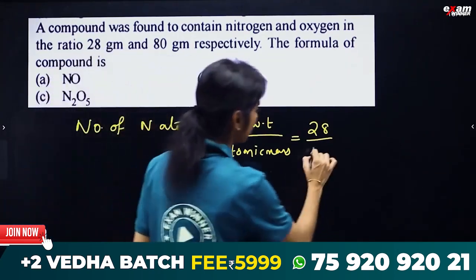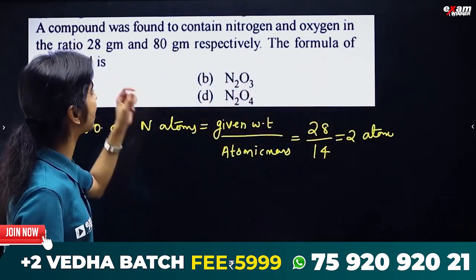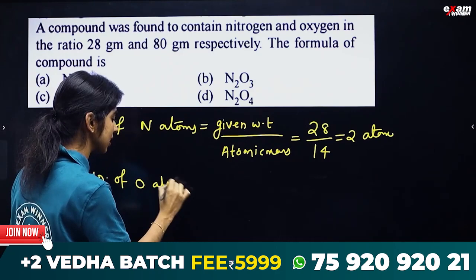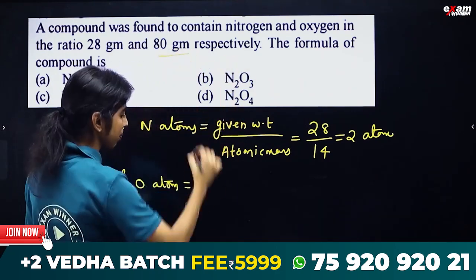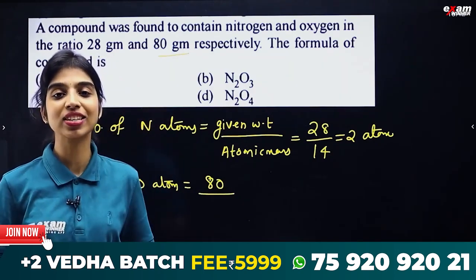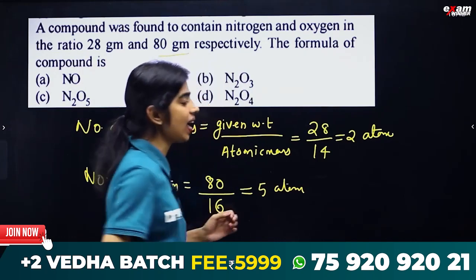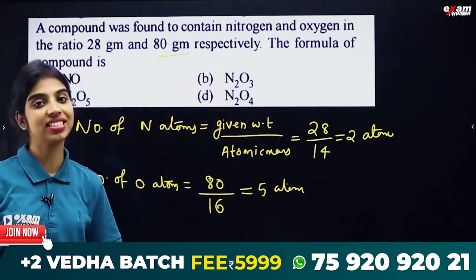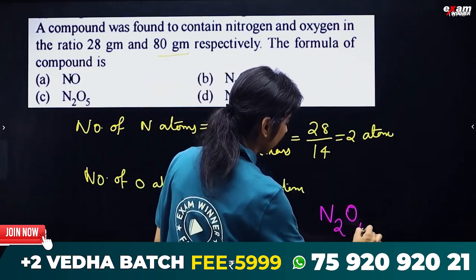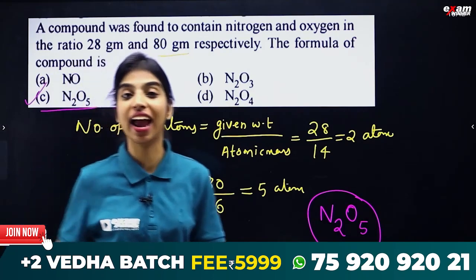28 divided by atomic mass of nitrogen, which is 14, gives 2. The number of oxygen atoms: 80 grams divided by atomic mass of oxygen, which is 16, gives 5. So the ratio of nitrogen to oxygen atoms is 2 to 5. The formula of the compound is N2O5. Option C is N2O5.